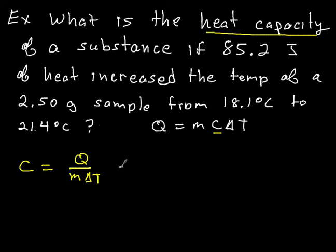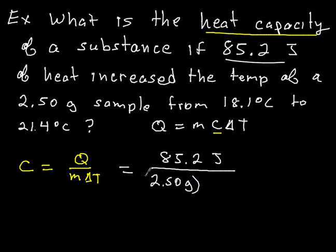And then plug in. And so Q, the amount of heat, we put in 85.2 joules. The mass of the substance was 2.50 grams. And it changed its temperature by 3.3. And so when you punch it into your calculator, you get a heat capacity of 10.3 joules per gram degrees Celsius. And so you figured out the heat capacity. And those are basic heat capacity problems.